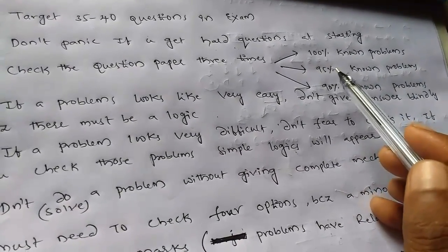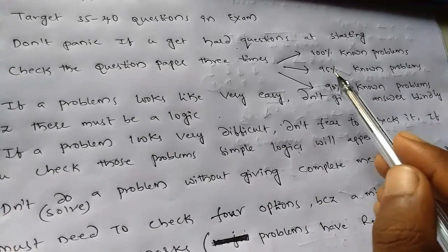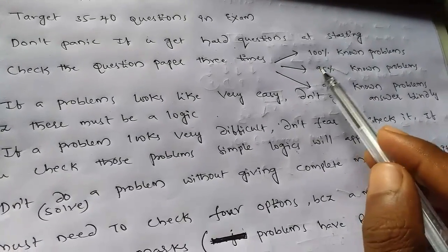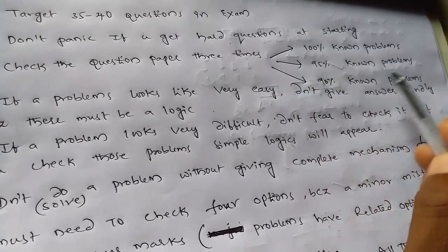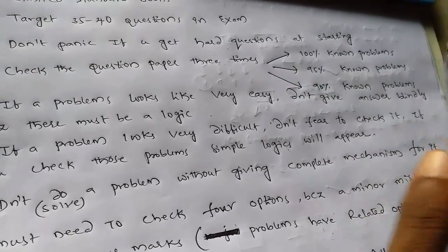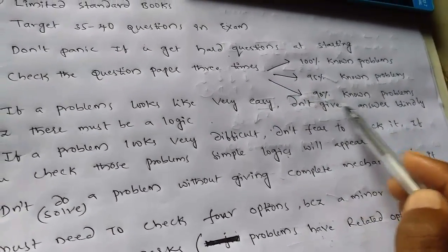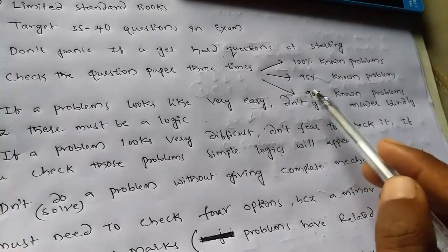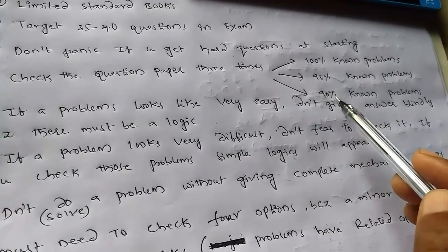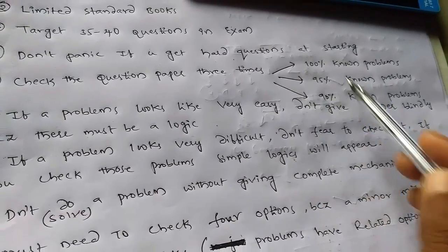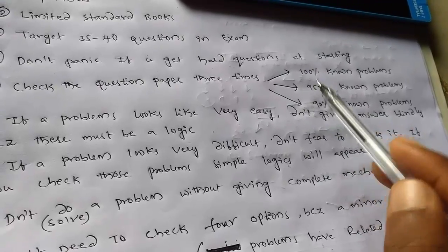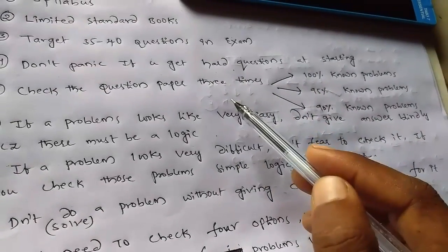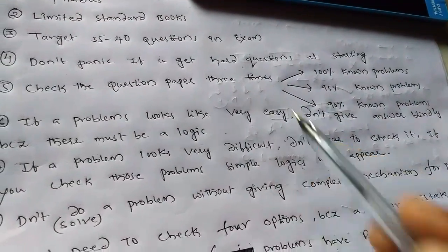If you have 95% known, that means there is a bit of confusion in the answers, go for the next second attempt and do the problems. In the third check, go for the 90% accurate problems which are known to you. By doing these three checkups, you may get 35 to 40 questions which are enough to get CSIR.